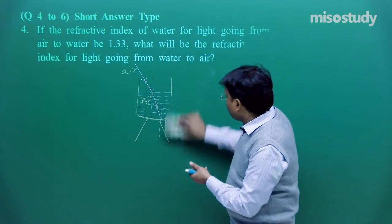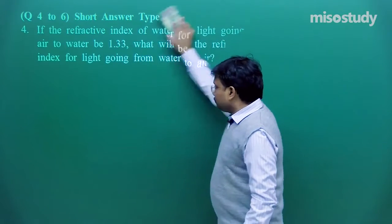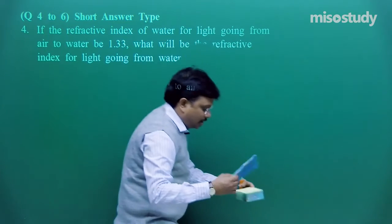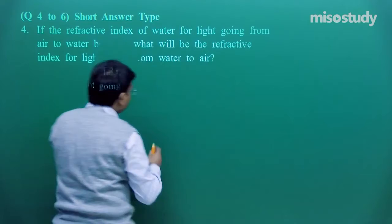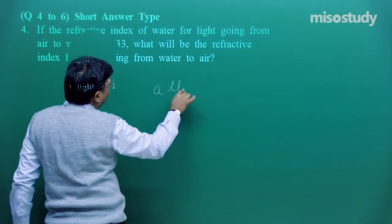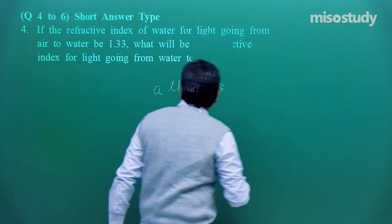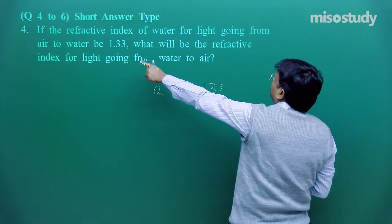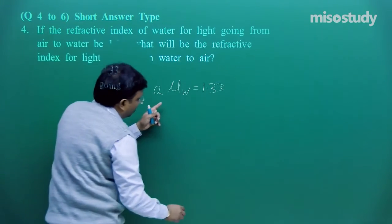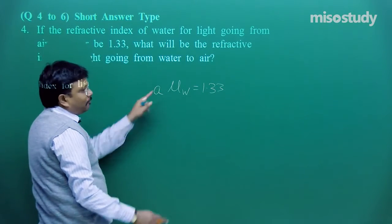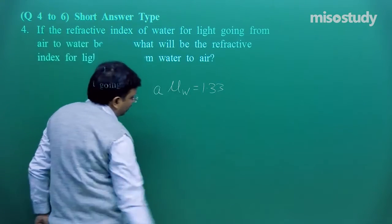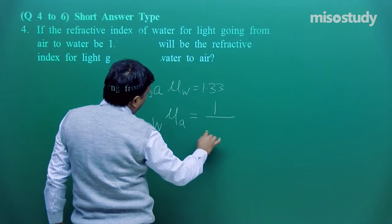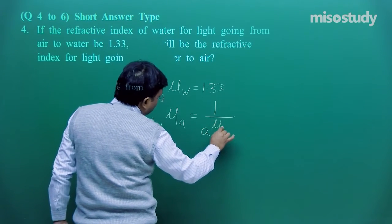Now, what is the formula we will use for this question? So the formula that we will use is A mu W is equal to 1.33. That is, please, please take a look. Refractive index of water with respect to air is 1.33 is given. After that, you have to find the refractive index with respect to water, air. First it was air, water. Now it is water and air. So now, W mu A is what? It is 1 upon A mu W.